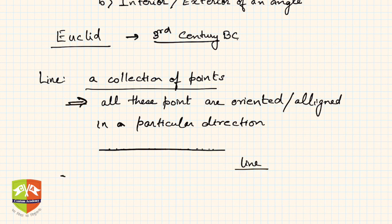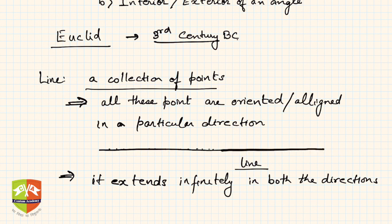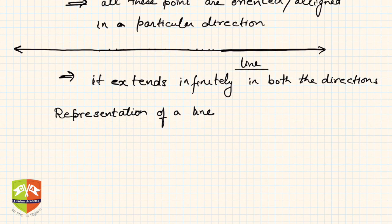Another important feature of a line is that it extends infinitely in both directions. This line can extend in this direction as well as that direction infinitely — there is no end to it. These are the characteristic properties of a line. Since we can't draw an infinitely long line on a piece of paper, we need to think about how we represent it.